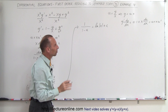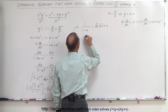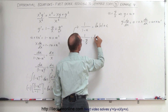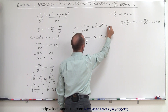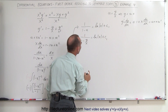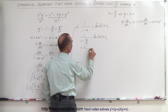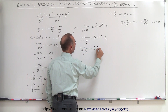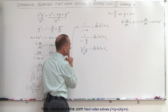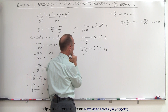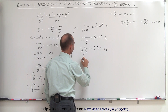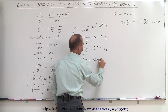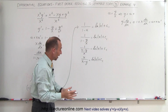Now we substitute back in for u. Instead of u we write y over x, so we get 1 divided by (1 minus y/x) equals the natural log of x plus c1. Finding the common denominator, this is 1 over (x minus y)/x equals the natural log of x plus c1, which simplifies to x divided by (x minus y) equals the natural log of x plus c1.